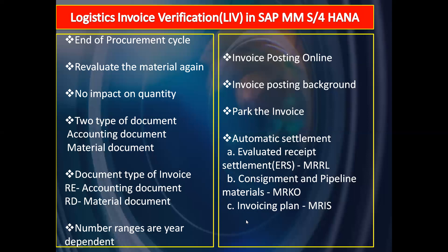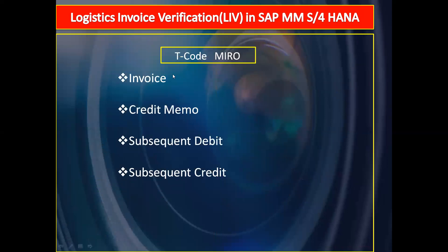Moving to the next slide — while doing invoice verification using the MIRO transaction code, there are different types of invoices or different ways we can post the invoice: invoice, credit memo, subsequent debit, and subsequent credit. These are the most important transaction types we need to know in invoice verification.